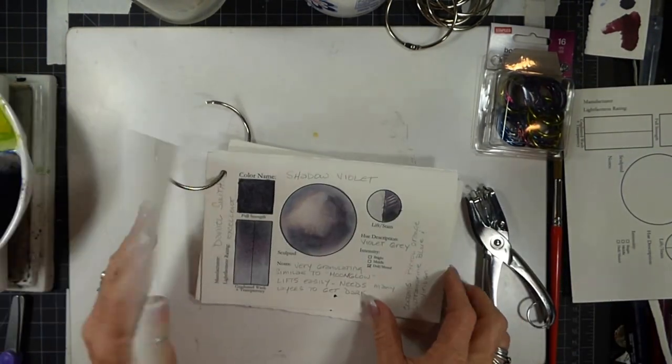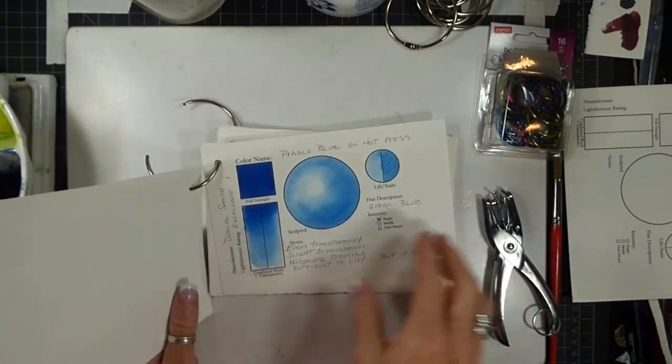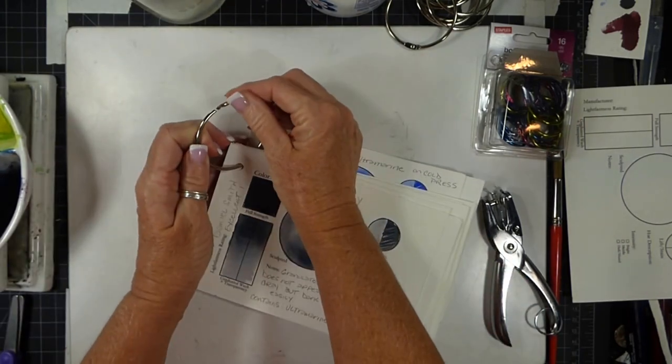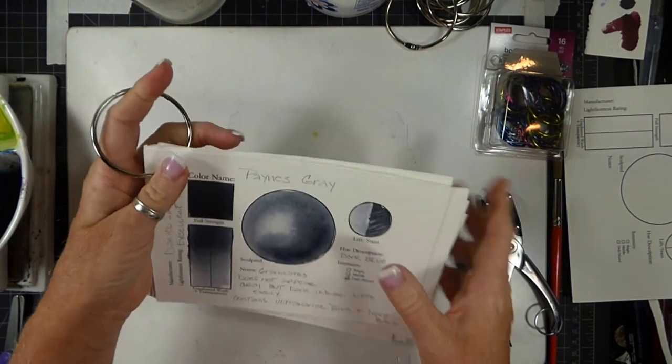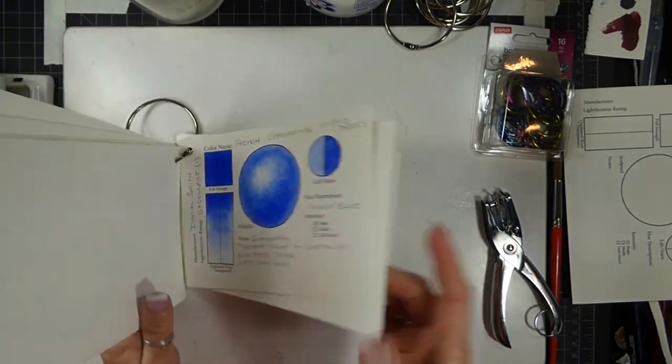If you decide that you want to look at a specific color, you can actually take this apart. Then you have it and you can just sort of hang it somewhere and it's easy to leaf through.